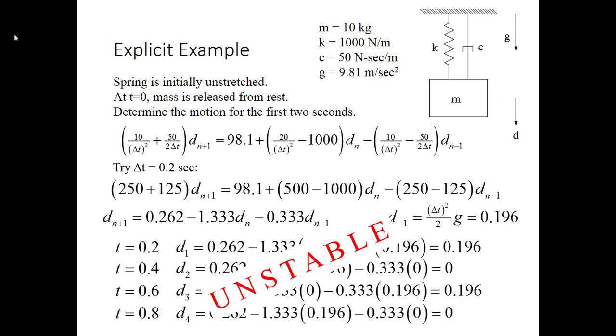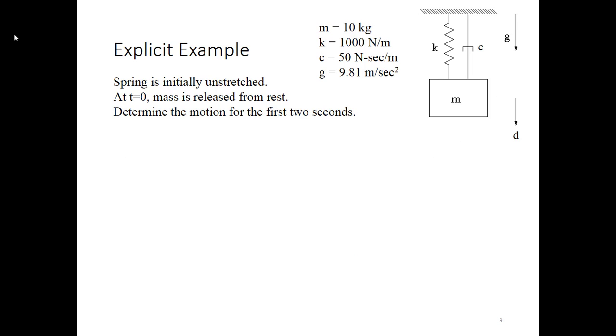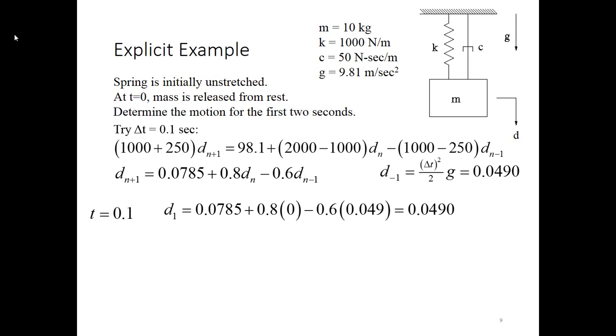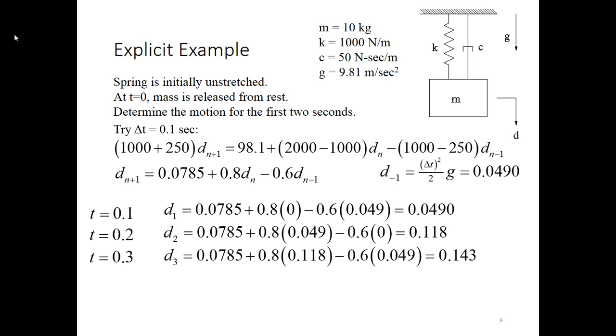So let's try a smaller time step and see what happens. So now I'm going to run this with a time step of delta t equal to 0.1 seconds. My recursion formula looks like this. Remember that the d minus 1 term has to change. So this gives me my new formula for the dn plus 1. So for a time step 0.1, that's now my first time step. That's 0.049. At 0.2, it's 0.118. 0.3, 0.143. This is looking more stable.